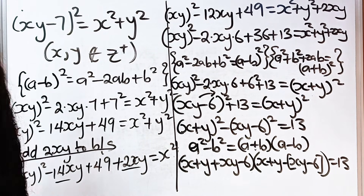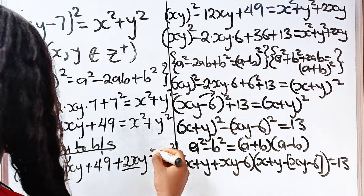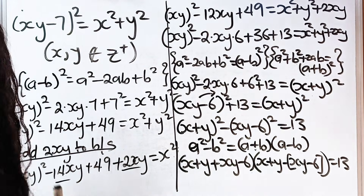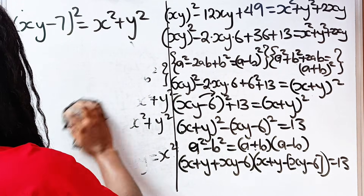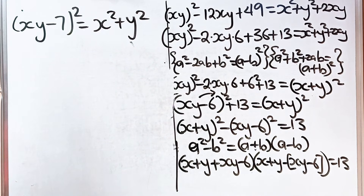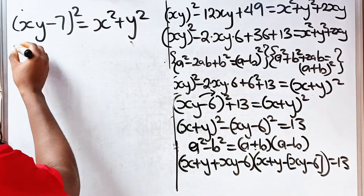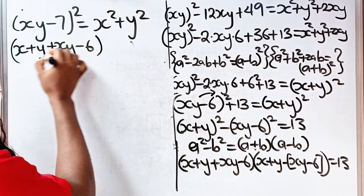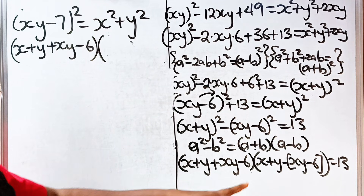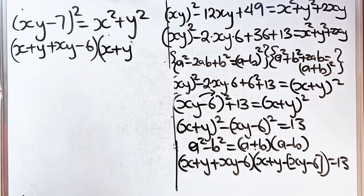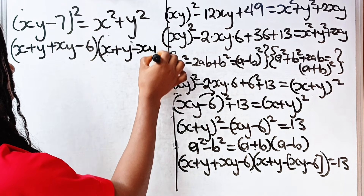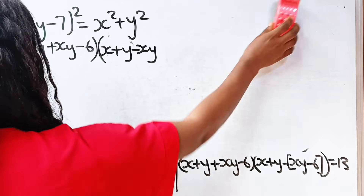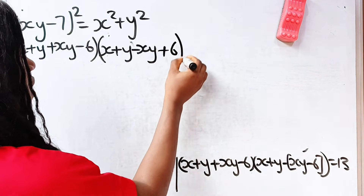If we open these brackets, let me clean this side of the board and continue. So we have (x + y + xy - 6) times (x + y - xy + 6) equals 13.